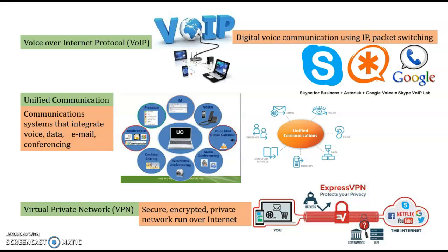With a Virtual Private Network, the data is encrypted and decrypted — it is locked and then unlocked. How it works: if I send something to Najmi, I will send a key saying 'only you can open this.' When the data arrives, Najmi uses the key that the sender sent, and the data becomes protected. If you look here, this is public and this is the VPN portion — the sensitive data that nobody else can know about.